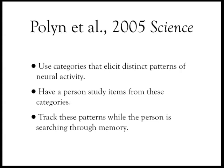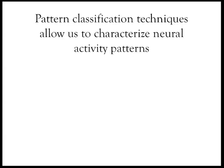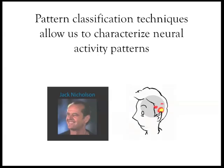Our goal in this study was to use categories that elicit distinct patterns of neural activity, have a person study items from these categories, and then track these neural patterns while the person is searching through their memory. We used a logistic regression based classifier to characterize these patterns during the study period. While the person was having their brain activity recorded, they studied these stimuli — so while the person was studying Jack Nicholson, there would be a characteristic celebrity-like pattern of neural activity. We would take all of the voxels throughout the person's brain and feed them into this classification algorithm, telling the classifier that this is an example of the celebrity category, as indicated by the leftmost output unit being activated.